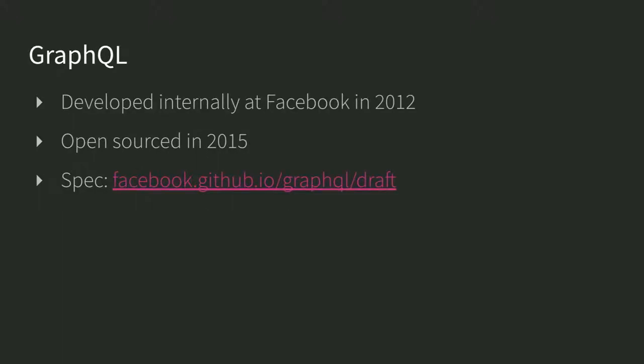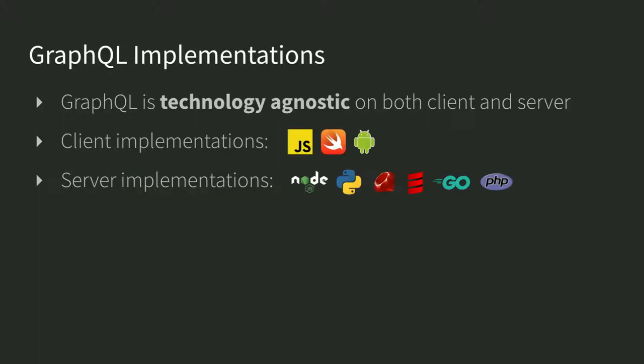GraphQL was developed internally at Facebook in 2012. They used it in production for some time, and it was built to serve the needs of their applications. It was open sourced in 2015, so it's been around as an open source technology stack for a while. It has a proper spec, so it can be implemented in various environments. GraphQL is technology agnostic, both client and server, meaning you can use it in different technology stacks.